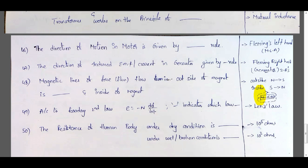The resistance of the human body under dry condition is 10⁵ ohms. Under wet or broken condition, the resistance is low — about 10³ ohms. In the next video, we will discuss remaining previous RRB bits. Thank you, and please subscribe to the channel for updates.